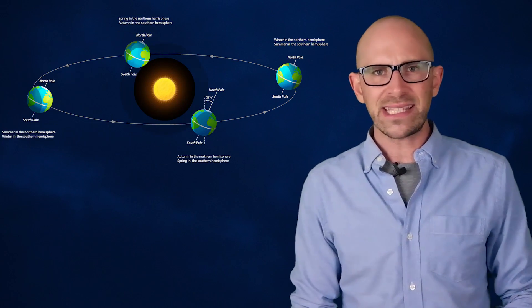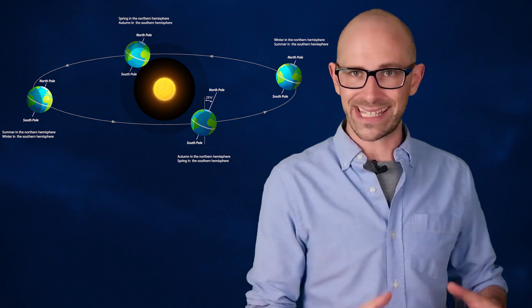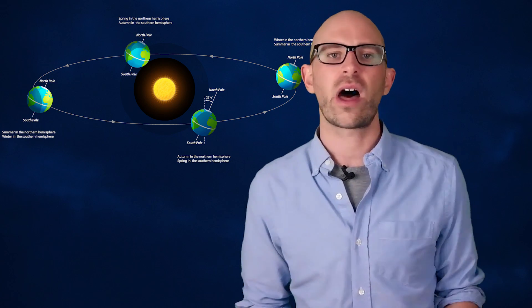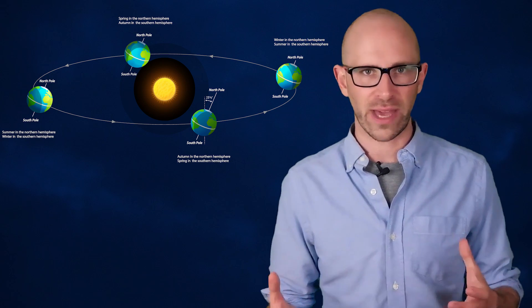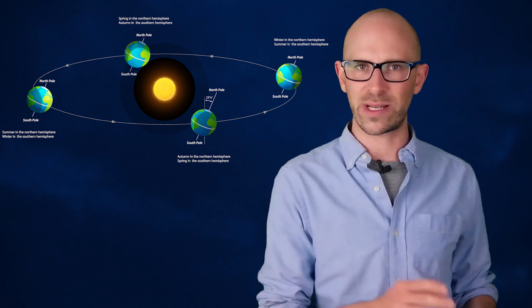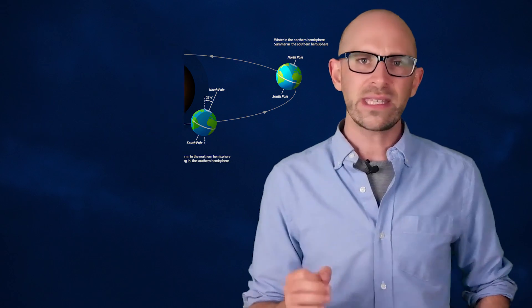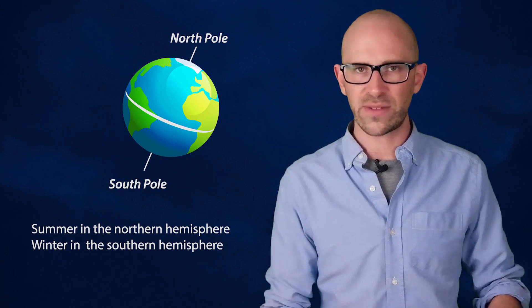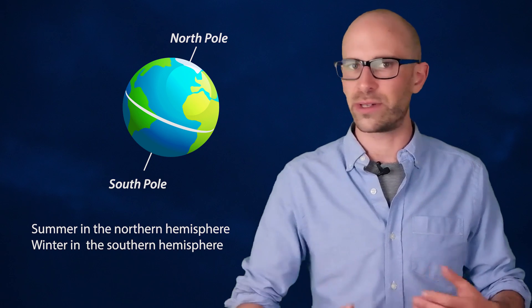As you might have guessed then or already know, the seasons are not caused by the distance the Earth is from the Sun, but rather are caused completely by the fact that the Earth is tilted on its axis 23.5 degrees. This is why when it's summer in the Northern Hemisphere, it's winter in the Southern Hemisphere and vice versa.